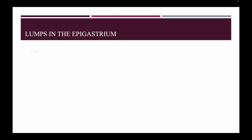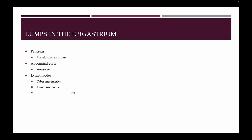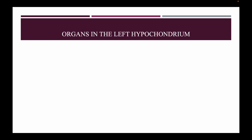Lumps in the epigastrium — in the pancreas: pseudopancreatic cyst. In the abdominal aorta: aneurysm. In the lymph nodes: TB mesentrica, lymphosarcoma, and secondary malignant growth. In the retroperitoneal structures: retroperitoneal sarcoma and teratoma.